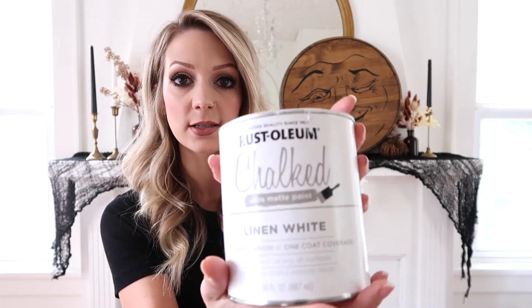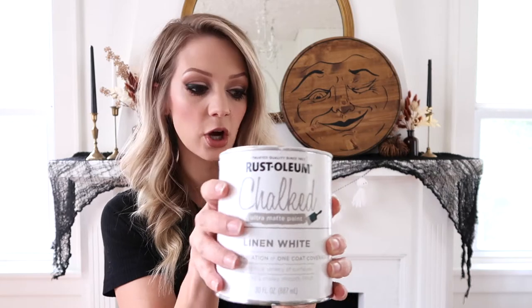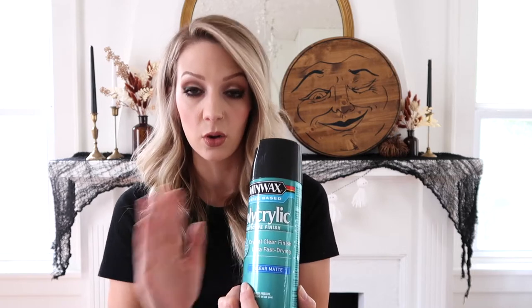If you wanted to do white paint, that's really pretty. The space I'm using it in is already on a white wall, so I wanted to have variation, which is why I chose to stain it. But this linen white chalked paint by Rust-Oleum is one of my favorite paints to use for signs. And I would still suggest painting it and then putting your polycrylic over top before putting your stencil on.